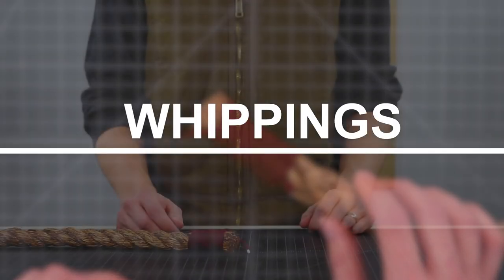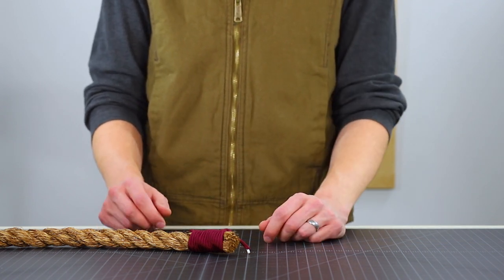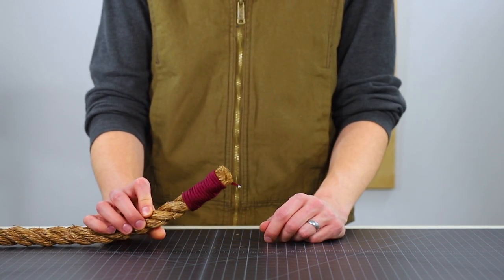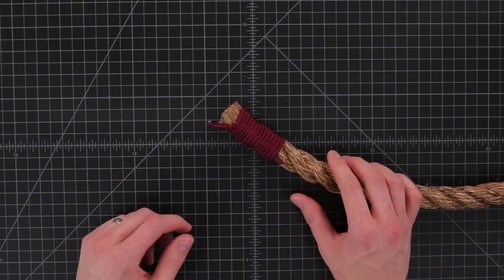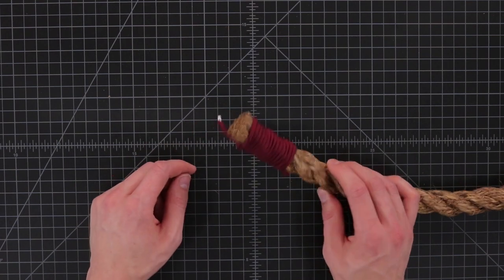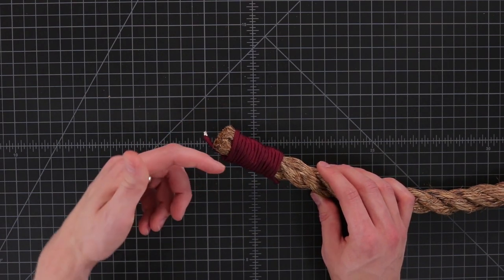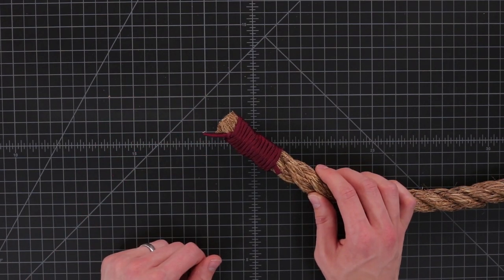This last category of knot is called a whipping and whippings are basically just wrapping a rope around an object. In this case it's wrapped around another rope. The most common use of whipping is to keep a rope like this from fraying. Because it's natural fiber I can't melt the ends like I do with paracord and so I have to wrap either tape or rope around the end to keep it from fraying.